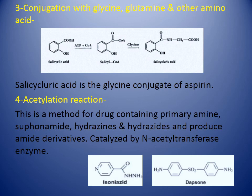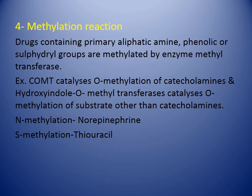The next is the acetylation reaction. Acetylation is a method for drugs containing primary amine, sulfonamide, hydrazines, and hydrazides, and produces amide derivatives. These types of reactions are catalyzed by the N-acetyltransferase enzyme. Isoniazid and dapsone are both drugs that can undergo this phase 2 reaction to form amide derivatives.